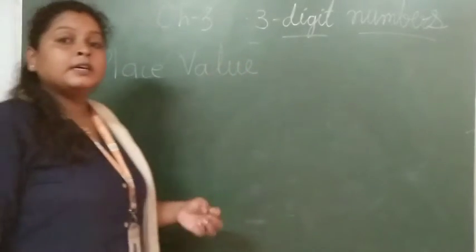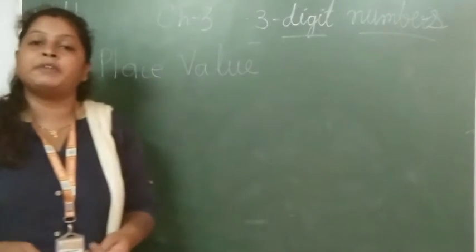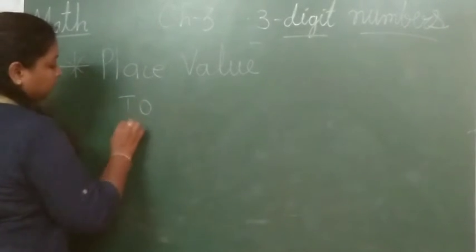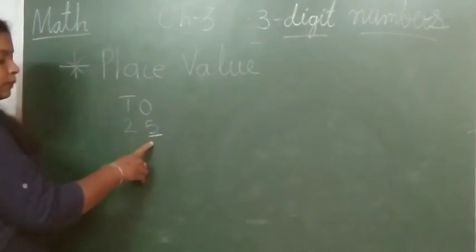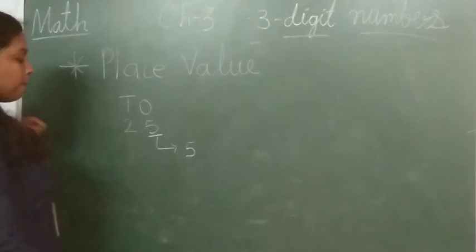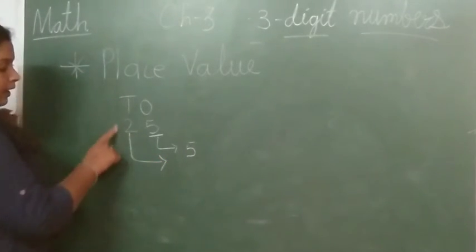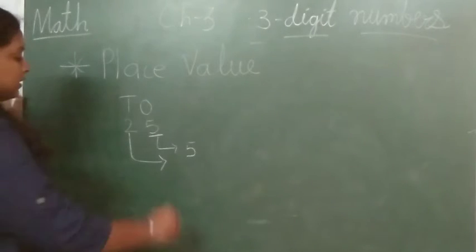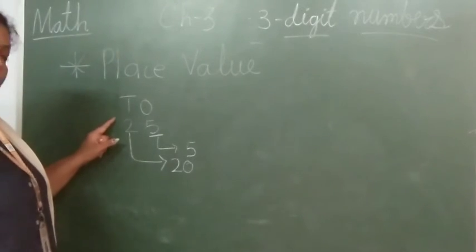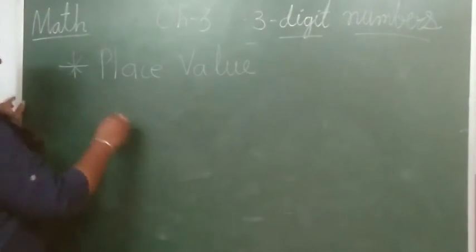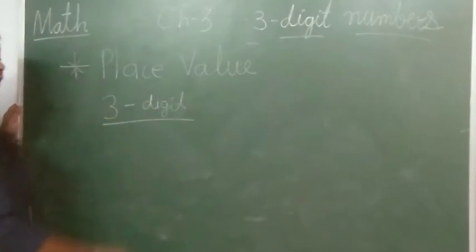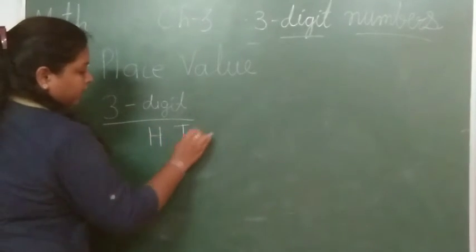After completing expanded notation, we will learn about place value. This concept was already covered in chapters 1 and 2, where we learned about 2-digit numbers. For a 2-digit number, if I ask for the place value of 5 on the ones place, it remains 5. But if I ask for the place value of 2 on the tens place, it is 20. Same thing you have to do in 3-digit numbers — we have 3 places: hundreds, tens, and ones.